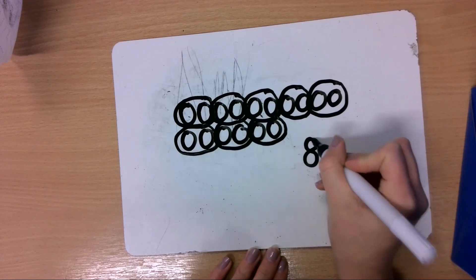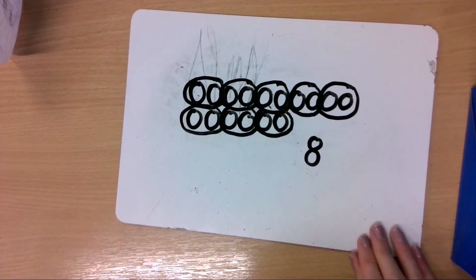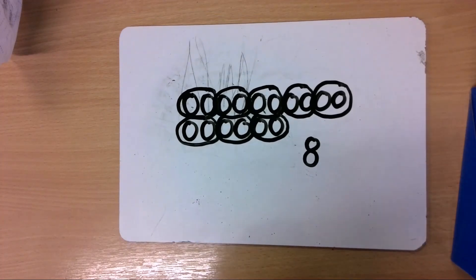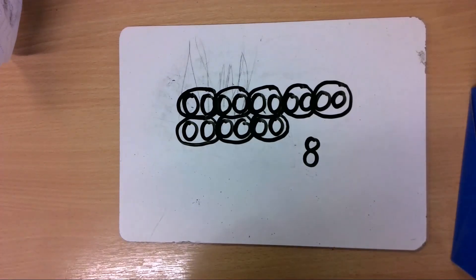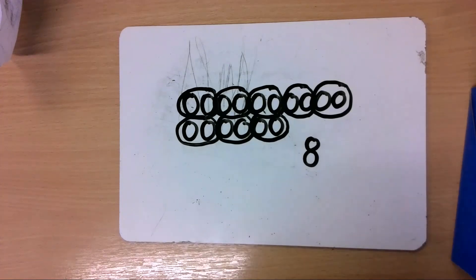Mr. Monroe will need 8 bags. That is our last question for today, Year 1. If you are feeling confident, brilliant — well done. Have a go at the questions on the worksheet for today. Remember to look really carefully at what you are grouping them in — it will be in twos, fives or tens. Look carefully, otherwise you will get the wrong answer. Well done, Year 1, bye!